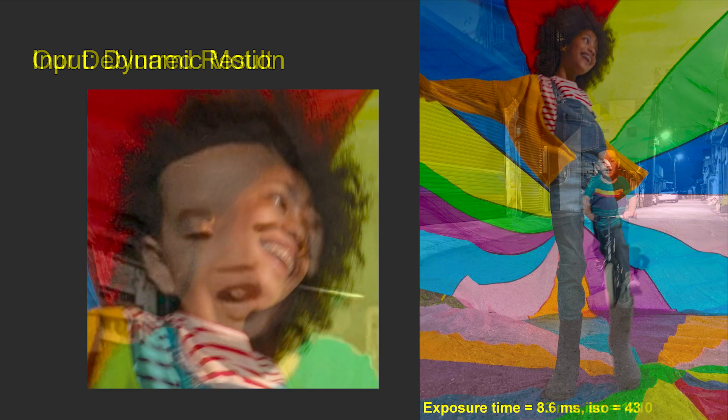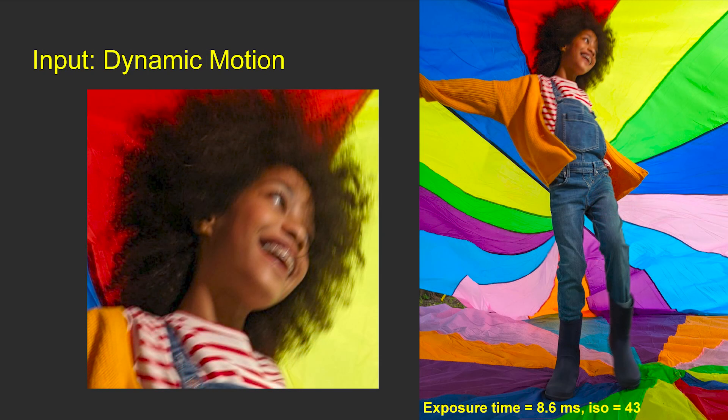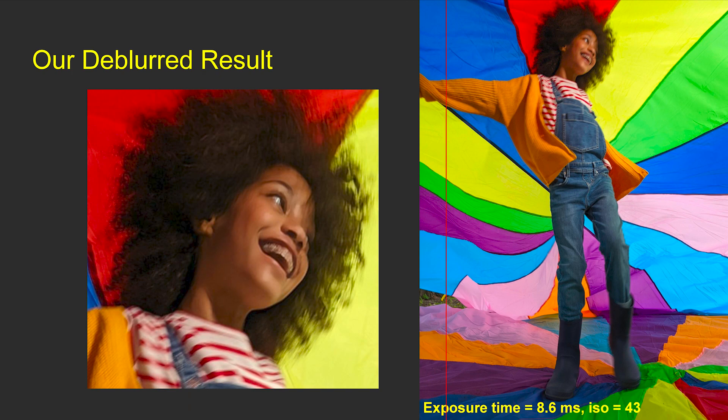While we use spatially invariant blurred images for training, our fusion net is still able to remove dynamic motion blur in real images. For example, in one shot, the light streaks on the eyes and teeth show different orientations due to head rotation, and our method can still reduce motion blur on the entire face.